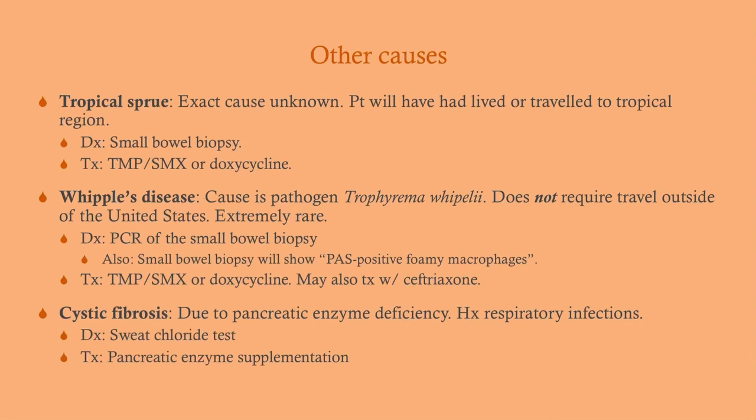Other causes include tropical sprue. The exact cause is unknown — it's very rare and may come up on Step 1 but is unlikely on Step 2 or 3. The diagnosis is very similar to celiac disease (also called celiac sprue) — a similar pathology picture. Diagnosis is via small bowel biopsy, and treatment is with antibiotics: either Bactrim or doxycycline.